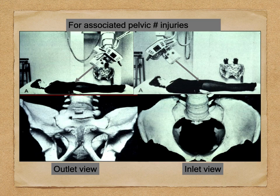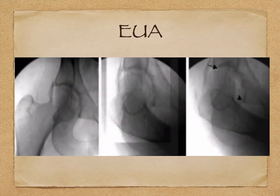Before ending, there are two other important views to identify any pelvic injuries, which will be dealt with in a separate lecture. As part of your complete assessment, it is important to take an outlet and an inlet view. Also when using an image intensifier and once the patient is positioned, it is important to do an examination under anesthesia to check for any loose bodies or medial opening of the joint.